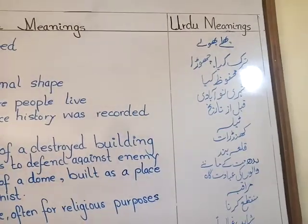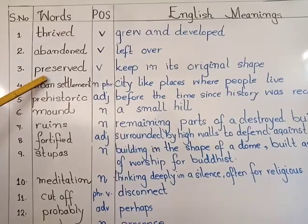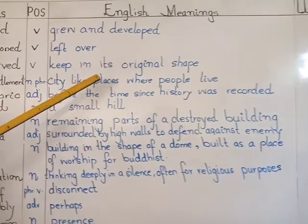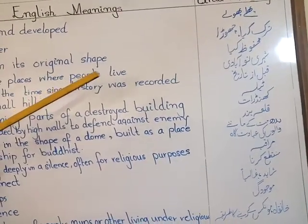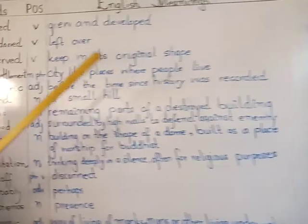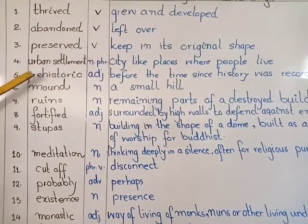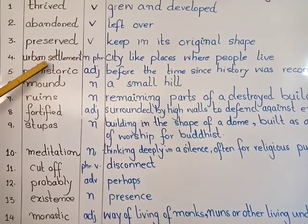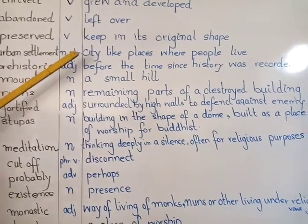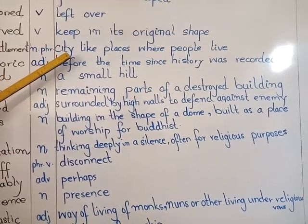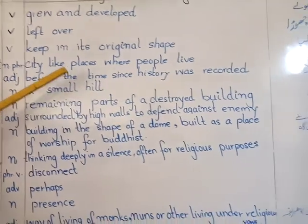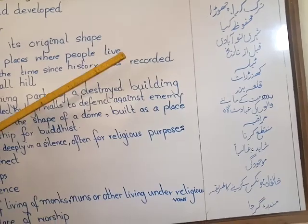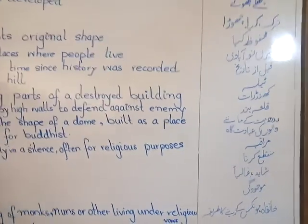The third word is 'preserved'. This is also a verb and the English meaning is 'keep in its original shape' — mahfooz kiya. The fourth word is 'urban settlement', a noun phrase because it comprises two words. The meaning is city-like places where people live — shahri abadi.